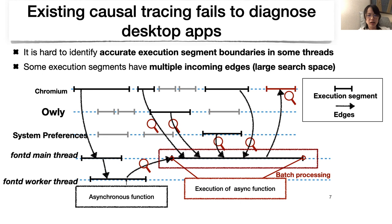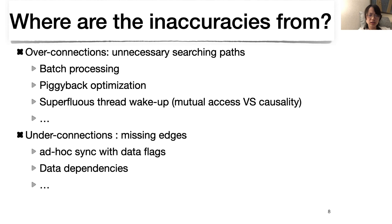In general, the inaccuracies in the existing causal tracing graph include both over-connections and under-connections. Over-connections add unrelated edges to the graph, like the example in the Chromium case. Under-connections miss some important edges. We summarize several program patterns that lead to inaccuracies. For the details of these program patterns, please refer to our paper.